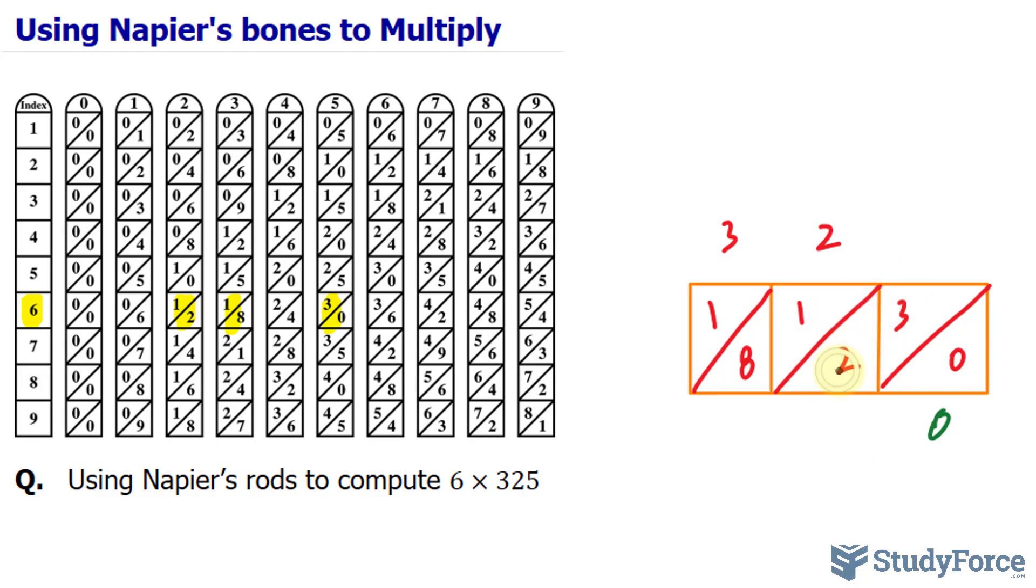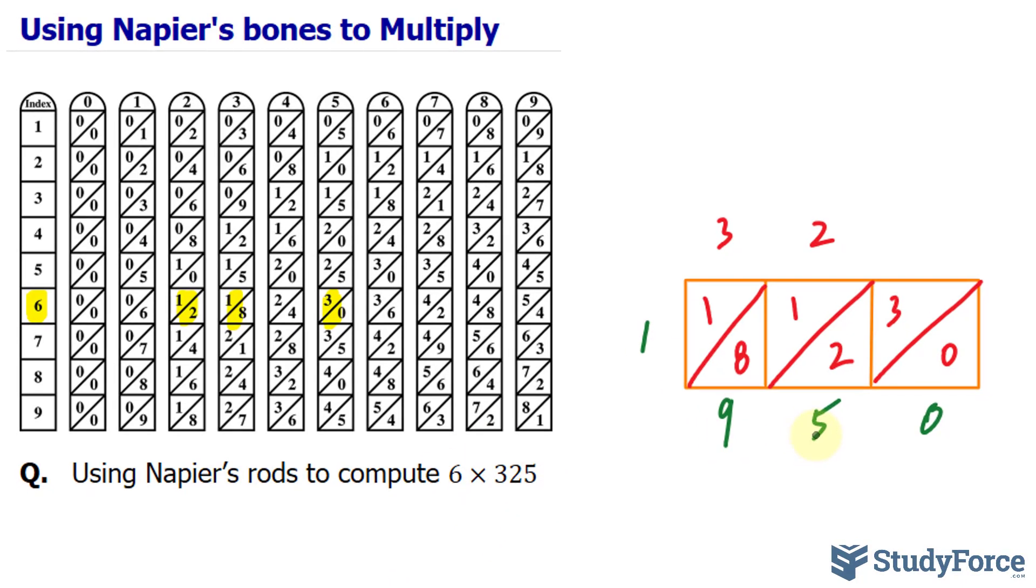Moving on to this diagonal, we have 2 and 3. Adding 2 and 3 is 5. Adding 8 and 1 is 9. And 1 on its own is simply 1. So the product or the answer to this is 1, 9, 5, 0.